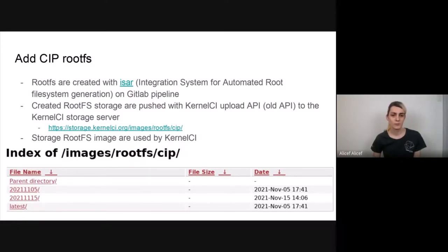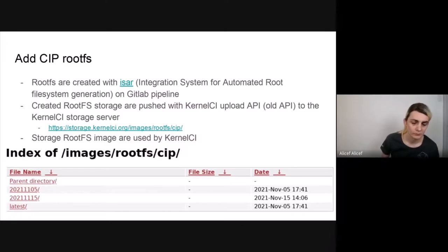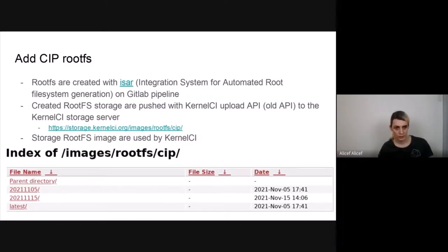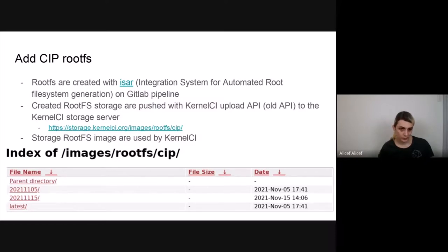After implementing the rootfs, the rootfs images are still created using the GitLab pipeline and using ISR, the CIP integration system for automated root system generation. All the created rootfs images are pushed using the KernelCI API to the KernelCI storage server. We are still using the old KernelCI upload API, and in the future we will start to move to a new API when it is ready.